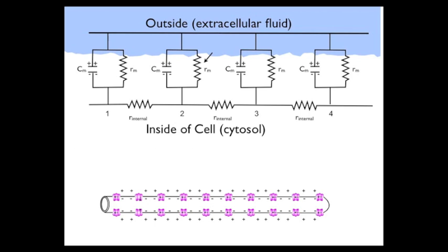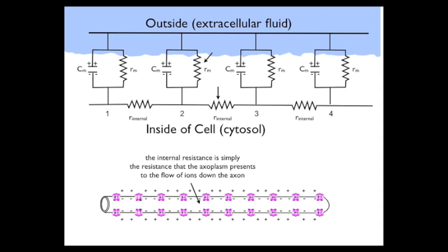The third thing is the internal resistance of the axon, which is determined by the size of the axon, because that determines the resistance the axoplasm presents to the flow of ions down the axon. Small axons will present a large resistance, and as the diameter of the axon becomes larger, the resistance will fall. As we'll see, the resistance to flow down the axon is probably the principal determinant of the conduction velocity of an action potential.